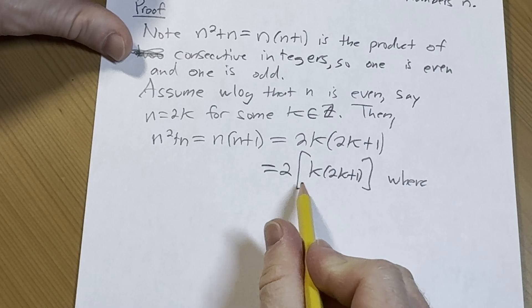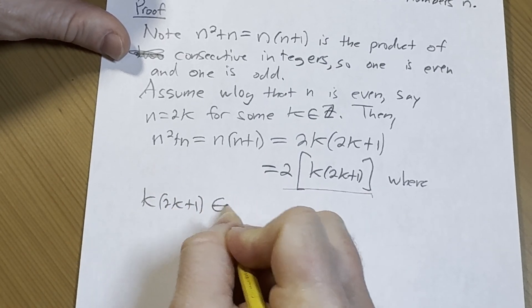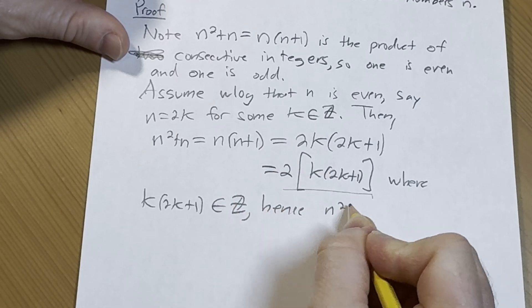Where this is an integer. Hence n squared plus n is even.